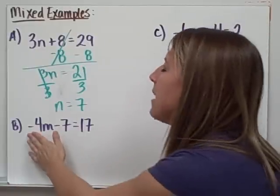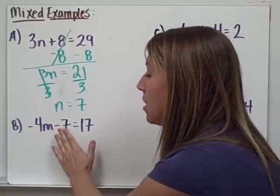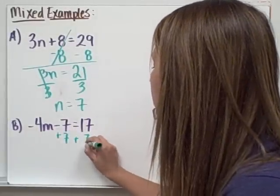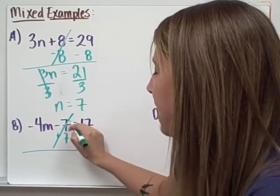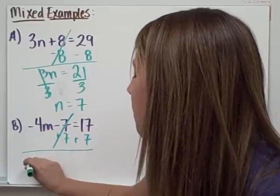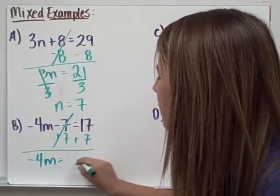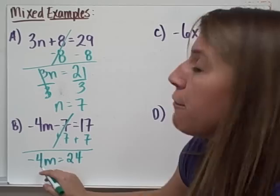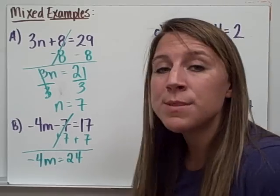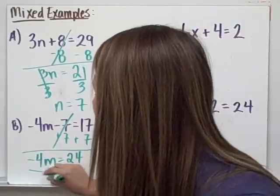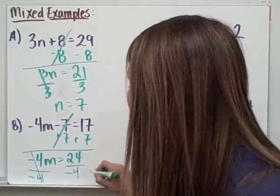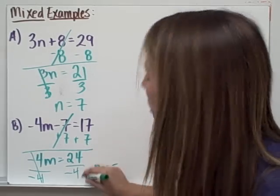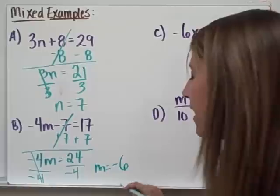In example b, negative 4m minus 7 is 17. The opposite of subtraction is addition, so I will add 7 to both sides. This helps to isolate it on the left. Negative 7 plus 7 is 0. On the left, I'm left with negative 4m. And 17 plus 7 is 24. Negative 4 times m equals 24. The opposite of multiplication is division. So I will divide by negative 4 on both sides. Leaving me with 1m equals, now the signs are different, so my answer is going to be negative. 24 divided by 4 is 6, so my answer is negative 6.